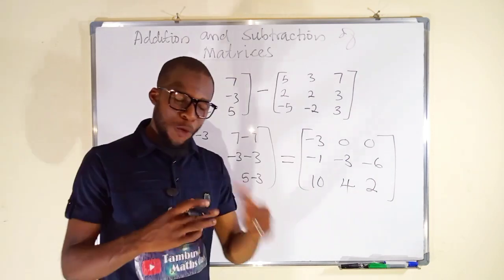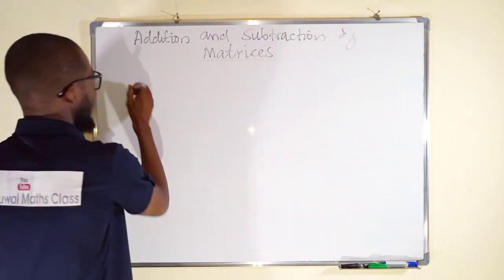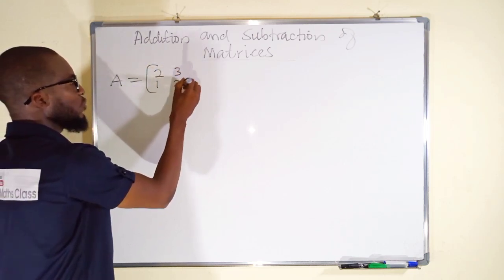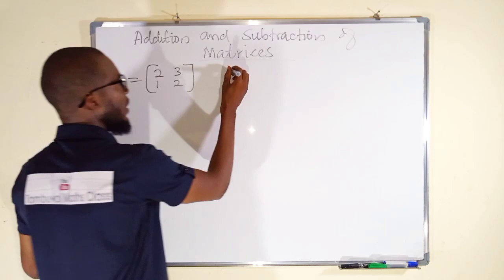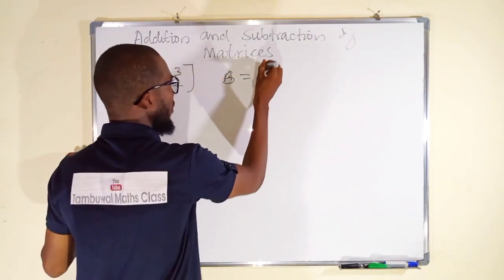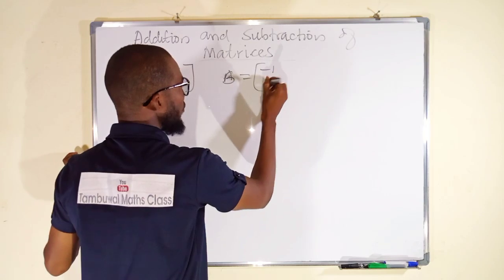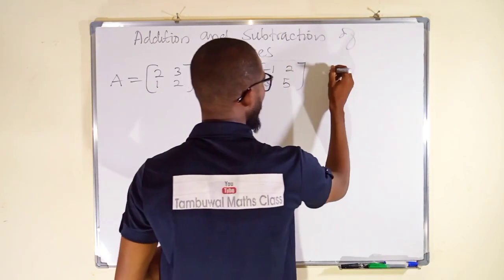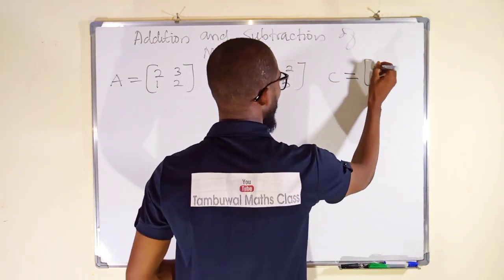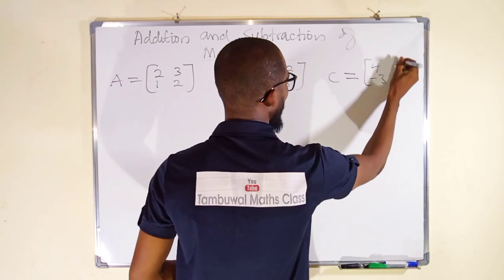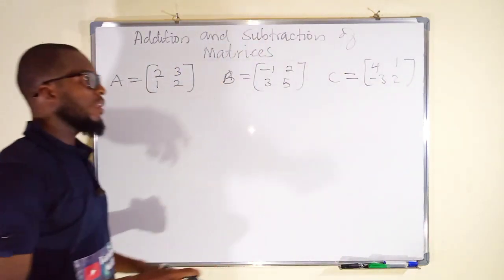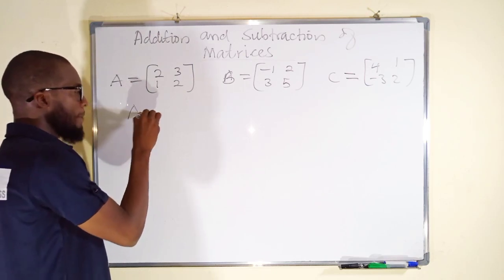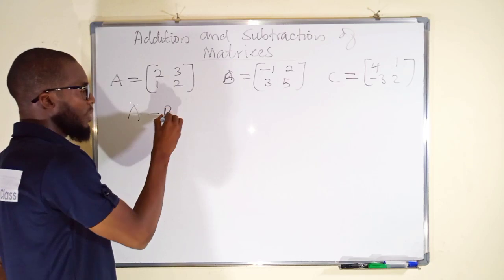Let's take one more example. Let matrix A be two, one, three, two. Let B be another matrix: minus one, three, two, and five. Another matrix C equals four, minus three, one, and two. We want to find A minus B plus C.